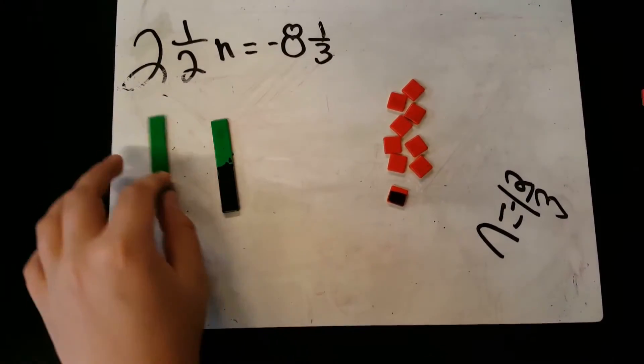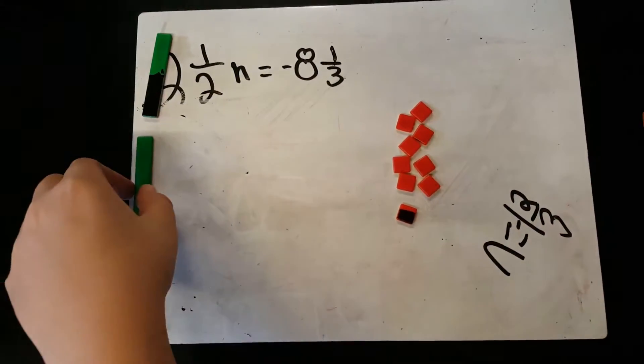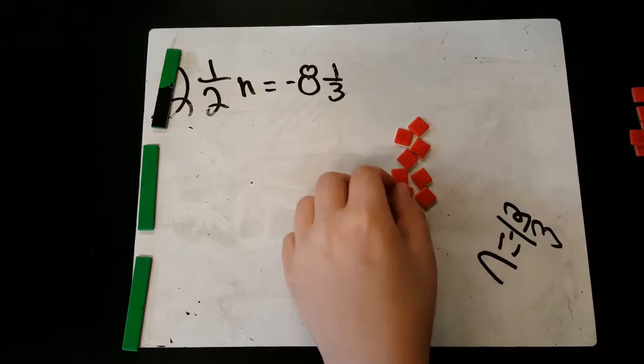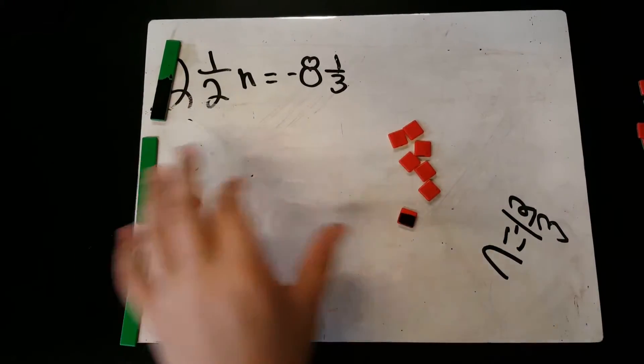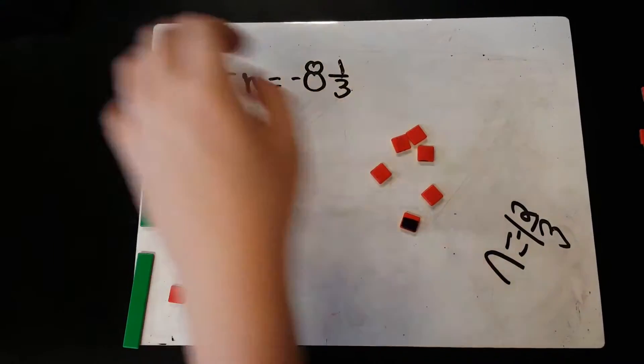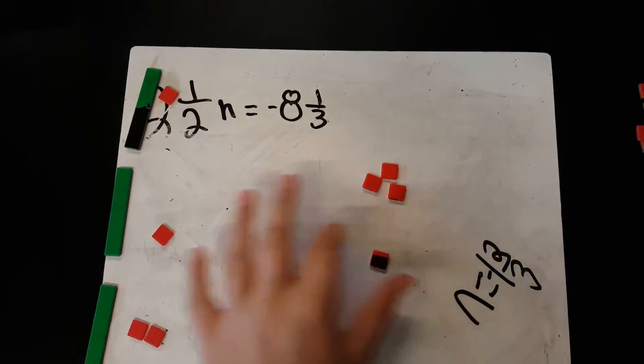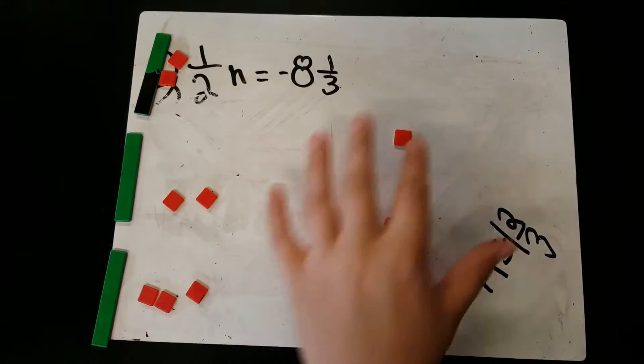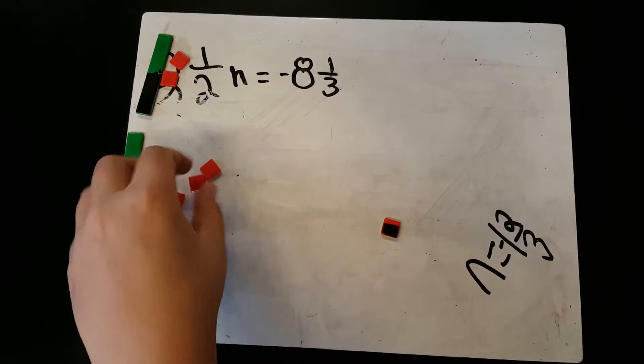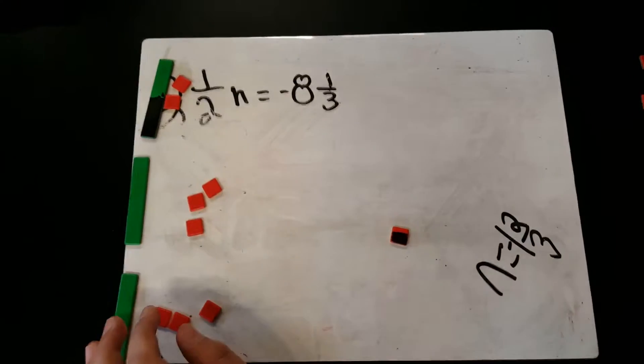Next, we're going to split these into equal groups. So we go one, two, three, one, two, three, and one, two. So then, now we're on an uneven amount.